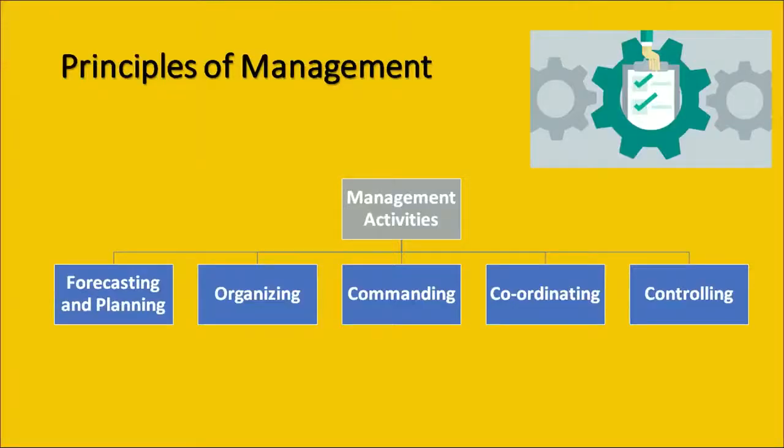Once the planning activity is done, we move ahead to the organizing activity. Organizing refers to the streamlining of various activities, the labor, the human and the non-human resources. Insurance being an intangible product, we have the human and the non-human resources as the labor — the agents and the people involved in the insurance process — and also the systems, computers and the infrastructure. So we need to organize these resources for the coming phase, which is the commanding phase.